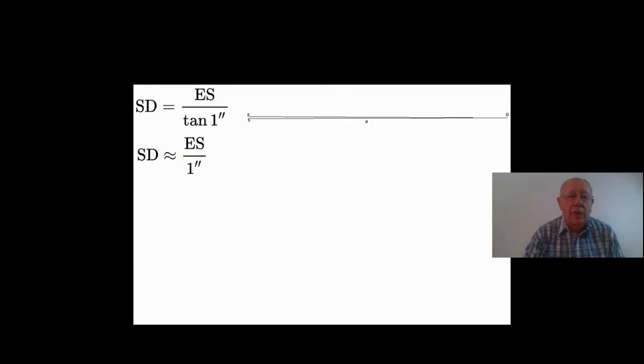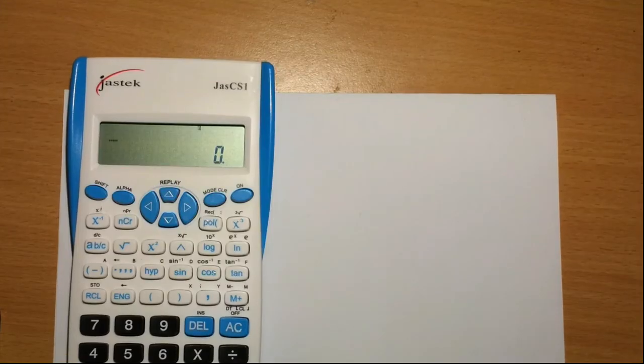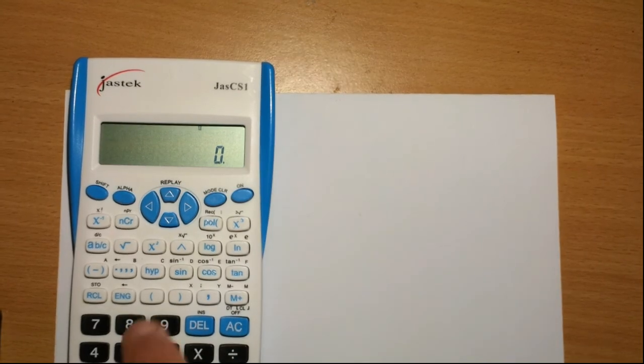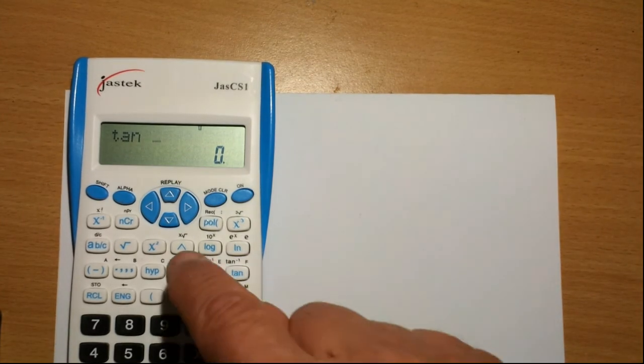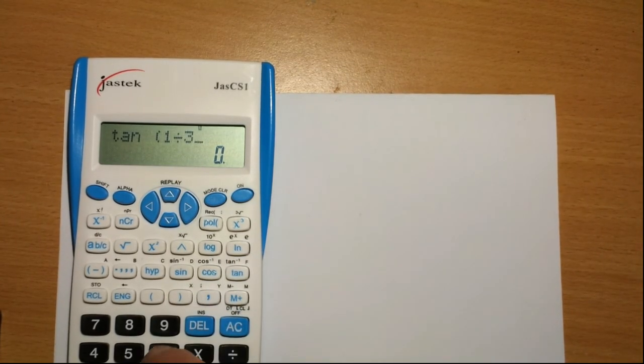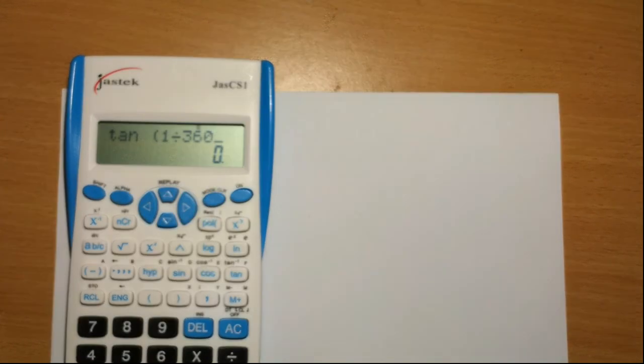If we find the tan of one arc second, so that's tan one divided by three thousand six hundred.